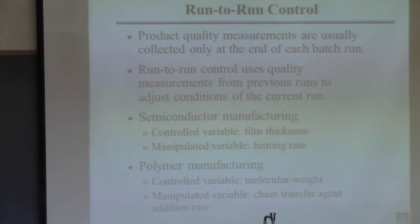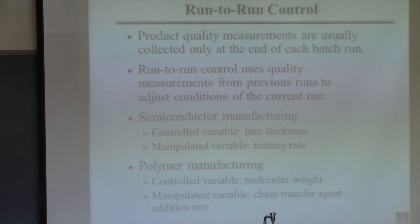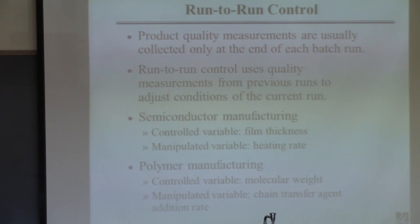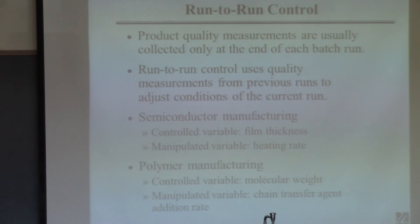Run-to-run control: for most batch processes, it's very hard to get measurements of product quality during the batch. For example, a polymer reactor with a six-minute residence time might only get polymer quality measurements every four hours. That's a mismatch — the time constant of the system is on the order of minutes but measurements come on the order of hours. That means you can't do feedback control as we normally do it, because measurements must be more frequent than the system dynamics.